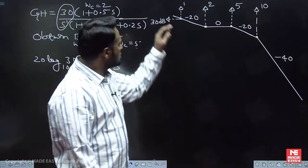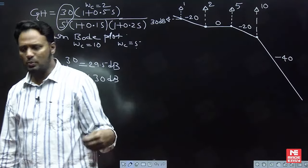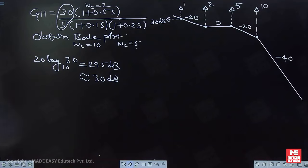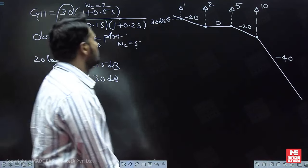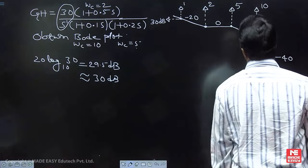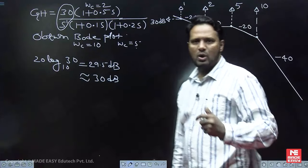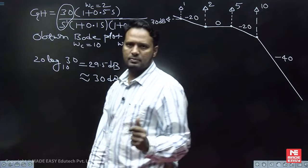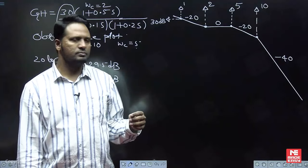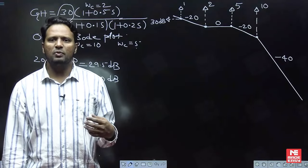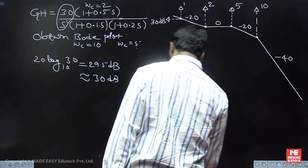This is the magnitude plot. This is the asymptotic Bode magnitude plot of the system. This is the magnitude plot. Now, what about the phase plot?